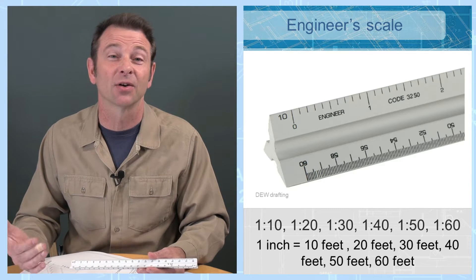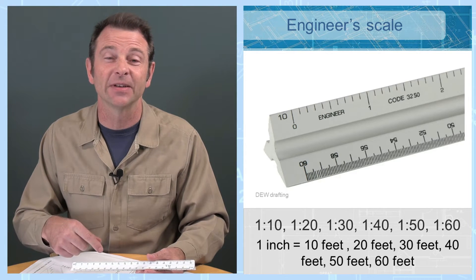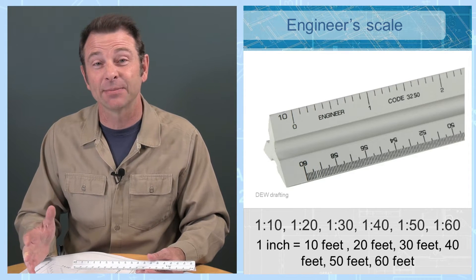Typical engineer scales are going to be 1 to 10, 1 to 20, 1 to 30, 40, 50, and 60. What does this mean?